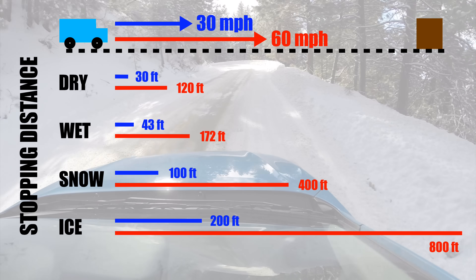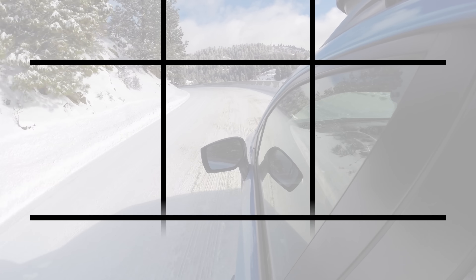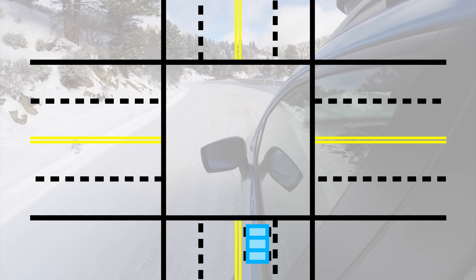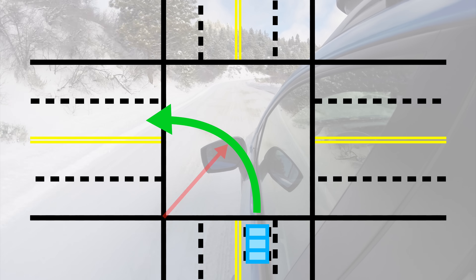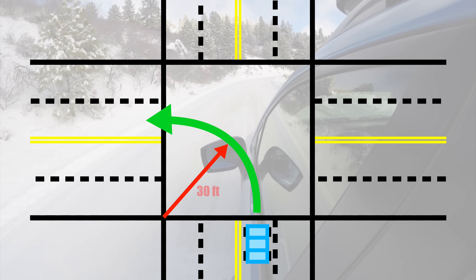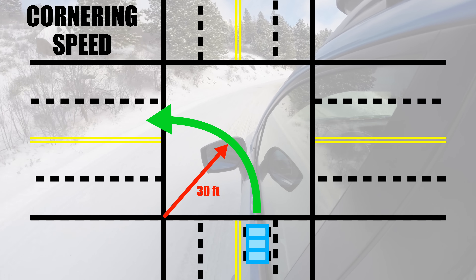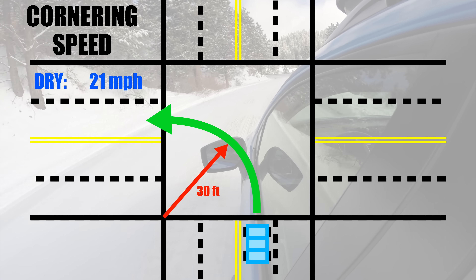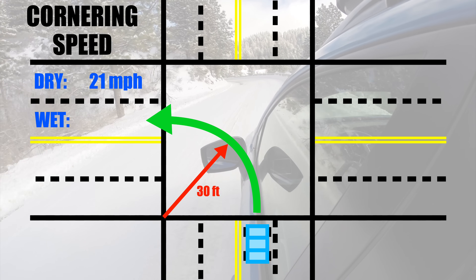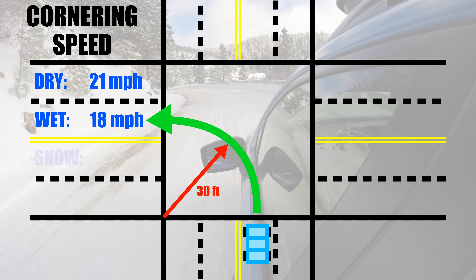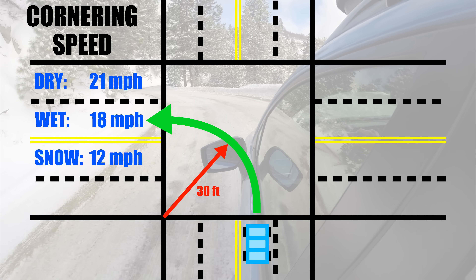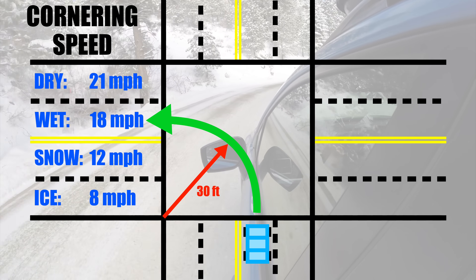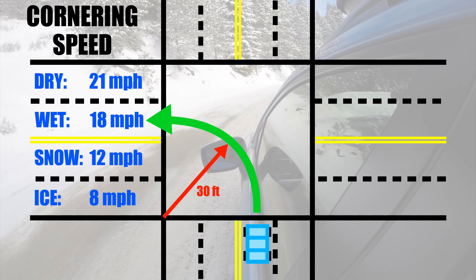The same logic applies to cornering. At an intersection with four lanes — two in each direction — if you're making a left turn from the inside lane into the next inside lane, that's a radius of about 30 feet. On dry roads you can make that corner at 21 miles per hour. In the wet, your maximum speed drops to about 18 mph. On snow, down to about 12 mph. And on ice, only about 8 miles per hour.